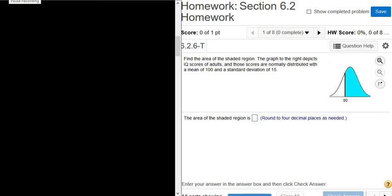In this problem, we're given a graph and we're asked to find the area of the shaded region. We're told that the graph depicts the IQ scores of adults that are normally distributed with a mean of 100, so mu in this problem.